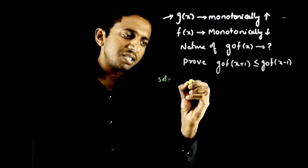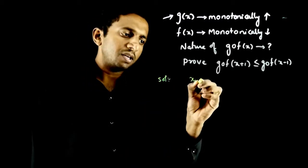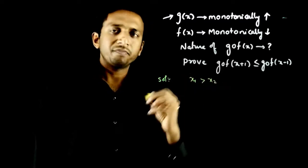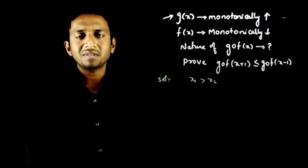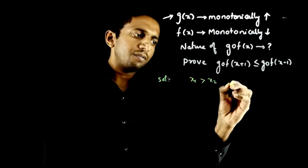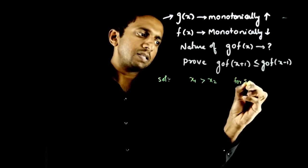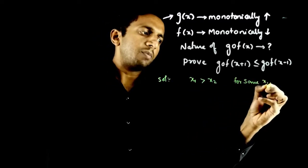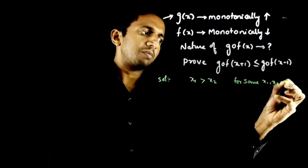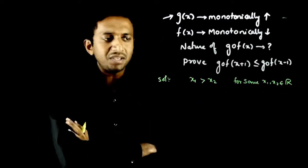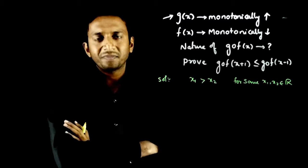Let us start with x₁ greater than x₂. Suppose there are two numbers such that x₁ is greater than x₂, for some x₁, x₂ belonging to real numbers. So x₁ and x₂ are two real numbers such that x₁ is greater than x₂.